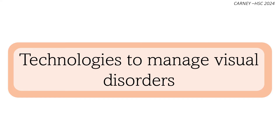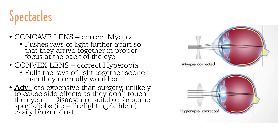Spectacles are thought to have been first invented in the later part of the 13th century, developed as corrective lenses for those with visual impairments. Today, we more commonly use the term eyeglasses or just glasses. Eyeglasses help to fix the incorrect placement of an image on the retina due to disorders like myopia and hyperopia. Glasses are made of lenses that can be either concave or convex; when light enters the lens, it is refracted or bent to focus correctly onto the retina.